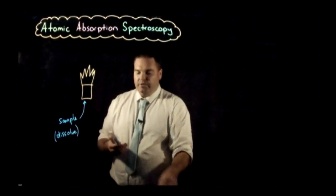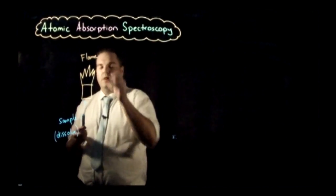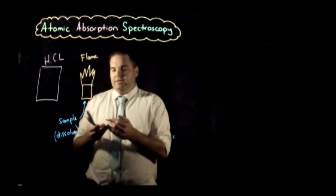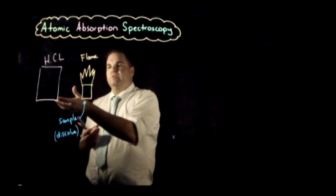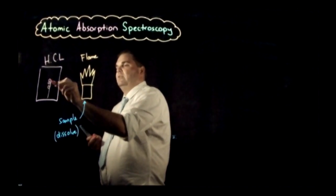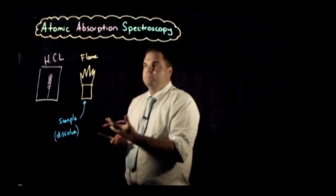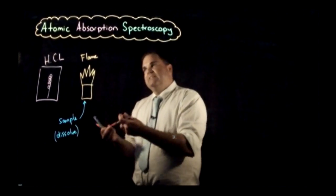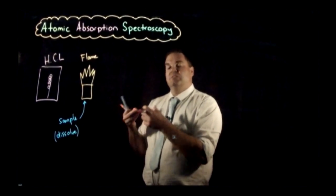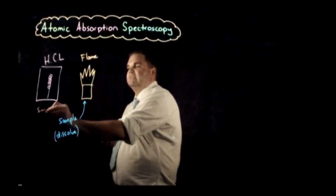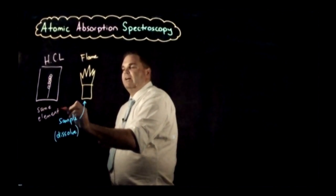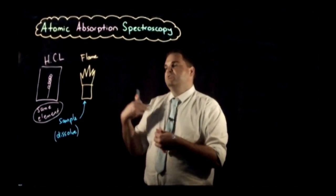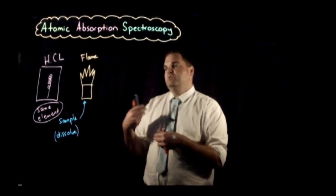We shine a light through the flame, which atomizes the sample. We need a hollow cathode lamp. A cathode is like a positive metal ion, and there's a filament inside, a bit like a light bulb. We pass electricity through it, and the atoms inside the hollow cathode lamp absorb and then emit energy. The key is that the hollow cathode lamp is made of the same element we are trying to determine. If you're trying to find copper, you use a copper hollow cathode lamp.